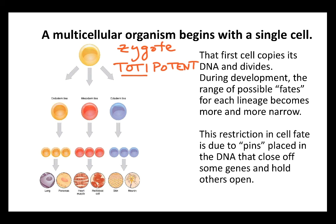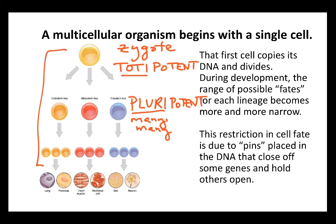After about four rounds of cell division — so about the 16-cell stage — cells become more specialized and start the process of becoming more specialized. Those cells are referred to as pluripotent. The process of going from being totipotent to being pluripotent restricts what's referred to as cell fate — what each of these new cells can become. And by the way, all of these are different kinds of stem cells.